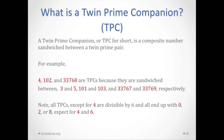So what is a twin prime companion? Some of this terminology is something we actually coined about 14 or 15 years ago. A twin prime companion, or TPC for short, is a composite number sandwiched between a twin prime pair.